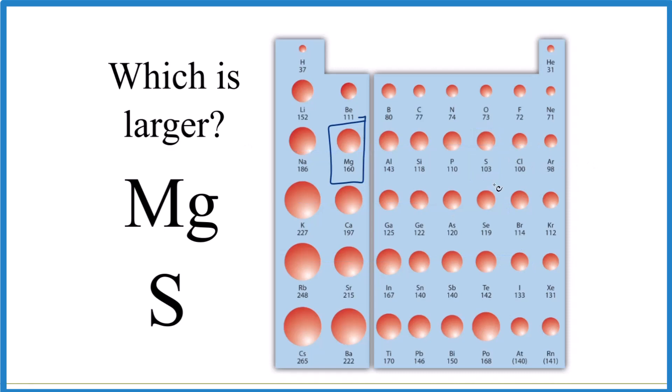So when we look at magnesium and sulfur, we can see magnesium is way over here. So it's going to be larger than sulfur.